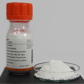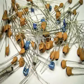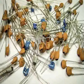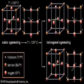Barium titanate is an inorganic compound with chemical formula BaTiO3. It appears white as a powder and is transparent when prepared as large crystals. It is a ferroelectric ceramic material that exhibits the photorefractive effect and piezoelectric properties. It is used in capacitors, electromechanical transducers, and non-linear optics.